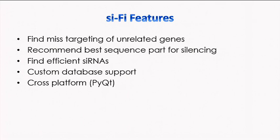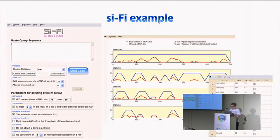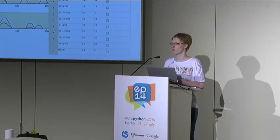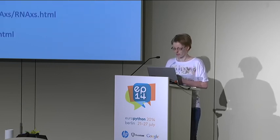We have created a software called SCIFI, which can be downloaded and currently runs on Windows. I'm making it cross-platform with PyQt. You can use a custom database, find siRNAs in your sequence, and identify off-target genes. I think it's very useful, and I wanted to show that even non-programmers can do quite useful things with Python. Soon we will publish an article about it.